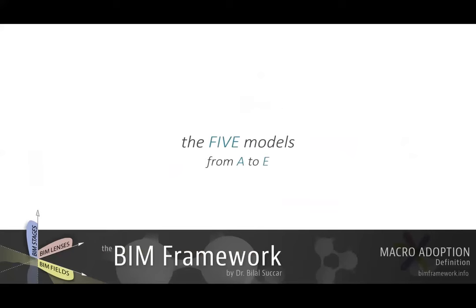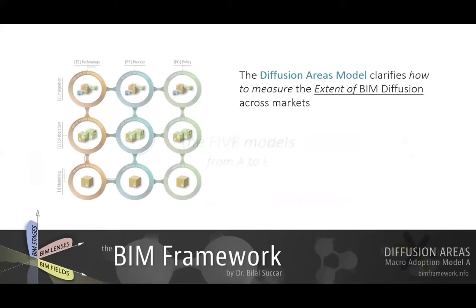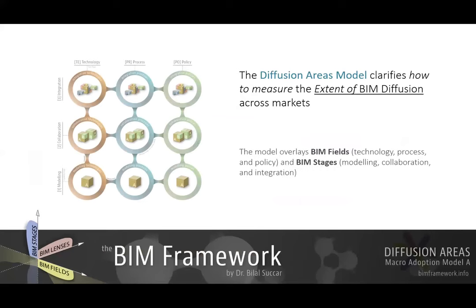So what are the five models from A to E? Model A, called the diffusion areas model, clarifies how to measure the extent of BIM diffusion across markets. This will be covered in detail in a separate video, which you can jump to directly using the video link. It uses BIM fields and BIM stages together to allow the measurement of BIM diffusion.